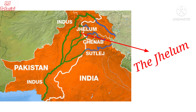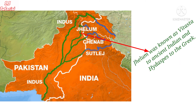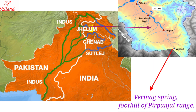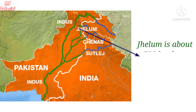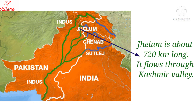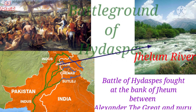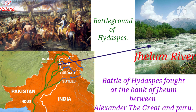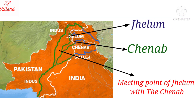The Jhelum is one of the major tributaries of the Indus river, known as Vitasta to ancient Indians and Hydaspes to the Greeks. It originates from the Verinag spring situated at the foot of the Pirpanjal range and is about 720 kilometers long. The Jhelum flows through the Indian territory of Jammu and Kashmir and through the Kashmir valley. The most well-known battle fought between Alexander the Great and Porus beside the Jhelum river is known as the Battle of the Hydaspes. The Jhelum joins with the Chenab.